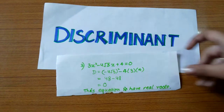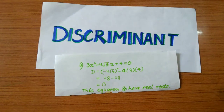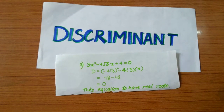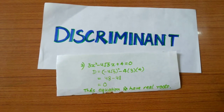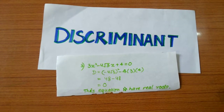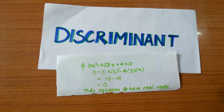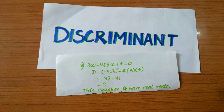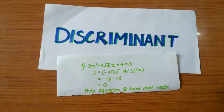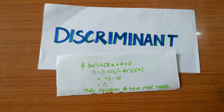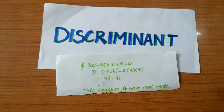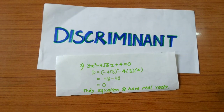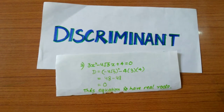Third example: 3x squared minus 4 root 3 x plus 4 equals zero. When we put the values into D equals b squared minus 4ac, we get zero. Thus this equation has equal roots.